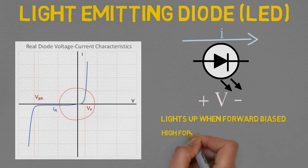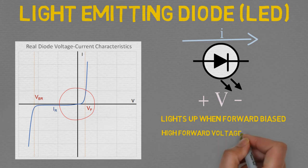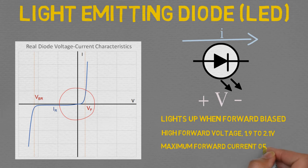LEDs are terrible rectifiers, however, because they have a very high forward voltage, around 1.9 to 2.1 volts, and common LEDs have a maximum forward current of only 20 milliamps.